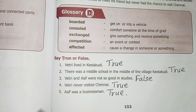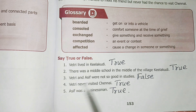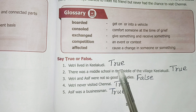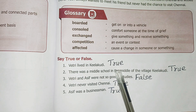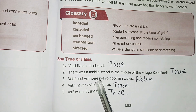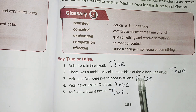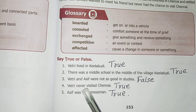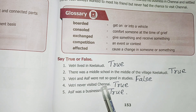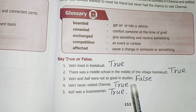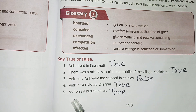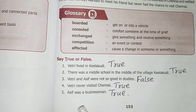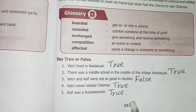Section 2. True or False? Say True or False. First one: Vetri lived in Keelapudi. Answer is True. There was a middle school in the middle of the village Keelapudi. True. Vetri and Asif were not so good in studies. False. Vetri never visited Chennai. True. Asif was a businessman. True.